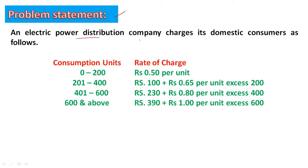An electric power distribution company charges its domestic consumers as follows. In a particular month, if units consumed are between 0 and 200, the charge is 0.50 paisa per unit. If units consumed are 201 to 400, the bill is 100 rupees plus 0.65 per unit excess over 200.